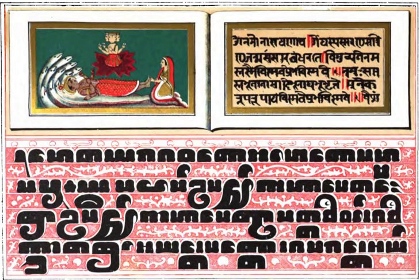The word Pali is used as a name for the language of the Theravada Canon. According to the Pali Text Society's Dictionary, the word seems to have its origins in commentarial traditions, wherein the Pali was distinguished from the commentary or vernacular translation that followed it in the manuscript. As such, the name of the language has caused some debate among scholars of all ages. The spelling of the name also varies, being found with both long and short forms, and also with either a retroflex or non-retroflex sound.